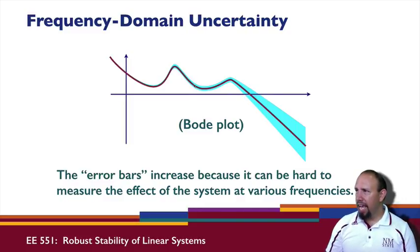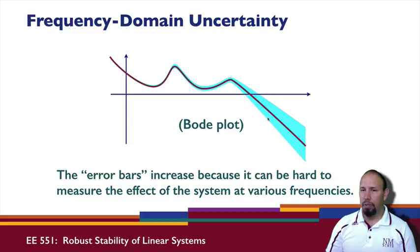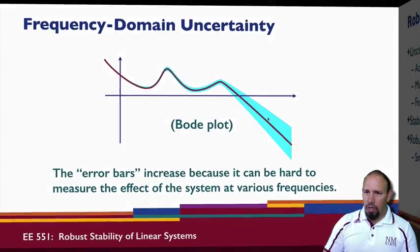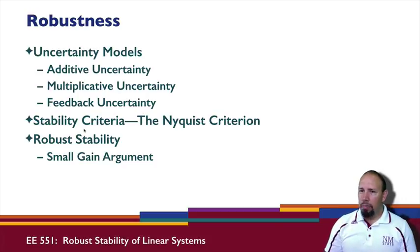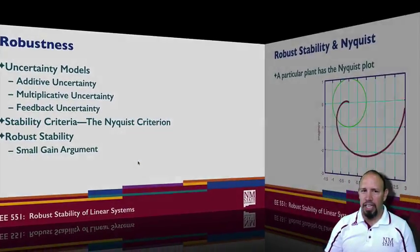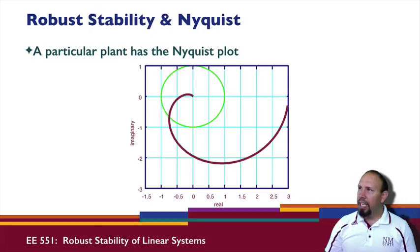This band around our nominal transfer function is the kind of thing that happens because of measurement error. When we come to robustness, we can have a number of different uncertainty models: additive uncertainty, multiplicative uncertainty, and feedback uncertainty. A stability criterion is the Nyquist criterion, and we also have the small gain argument.